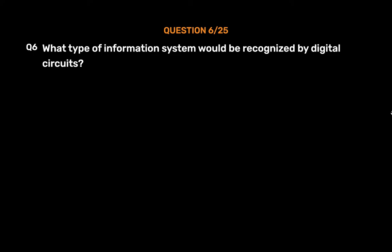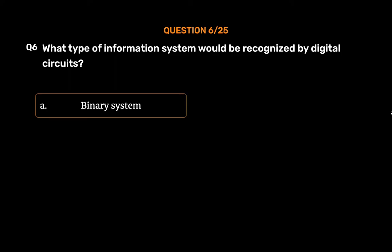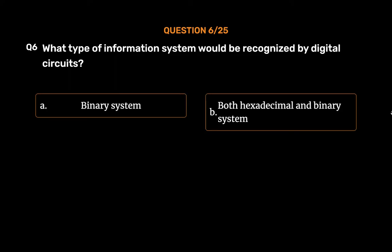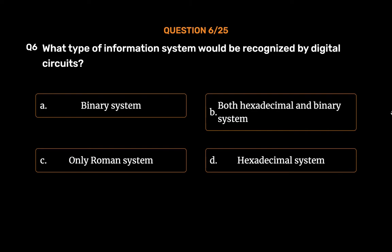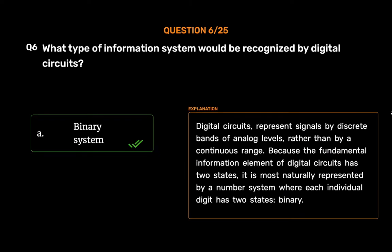Question No. 6. What type of information system would be recognized by digital circuits? Option A. Binary system. Option B. Both hexadecimal and binary system. Option C. Only Roman system. Option D. Hexadecimal system. The correct answer is Option A, Binary system. Digital circuits represent signals by discrete bands of analog levels, rather than by a continuous range. Because the fundamental information element of digital circuits has two states, it is most naturally represented by a number system where each individual digit has two states — Binary.